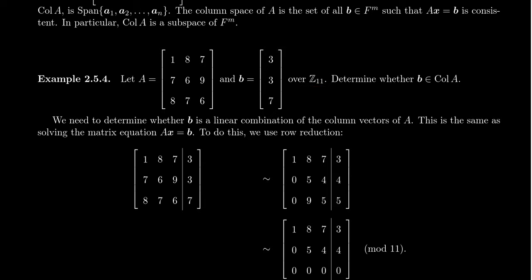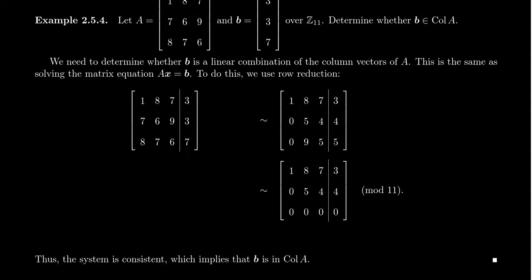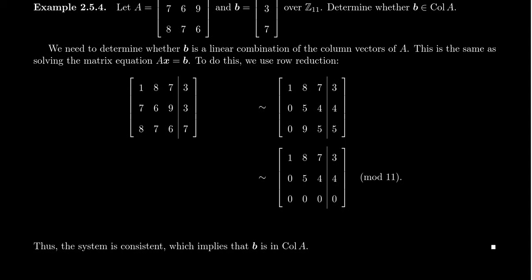We want to determine whether b belongs to the column space of A or not. To determine whether b is inside the column space, we have to determine whether b is a linear combination of the column vectors of A. This is the same as solving the matrix equation Ax = b. We have the associated augmented matrix set up ready to go right here.